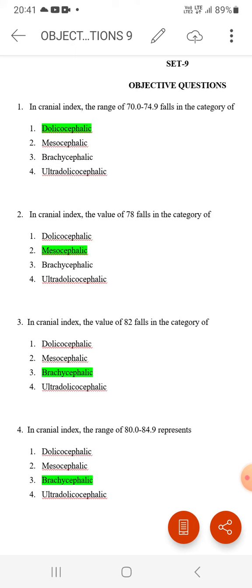Number one: In cranial index, the range of 70 to 74.9 falls in the category of dolicocephalic.